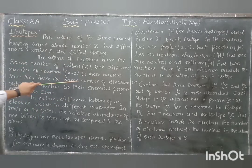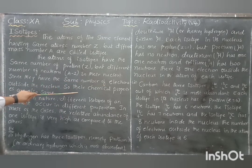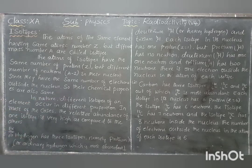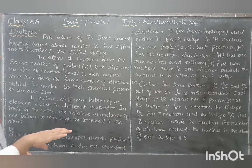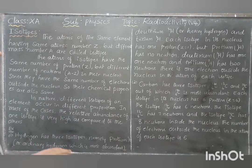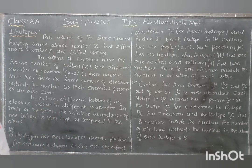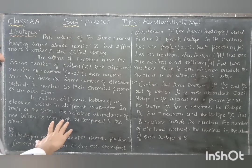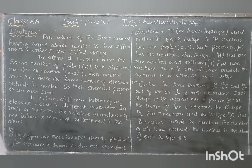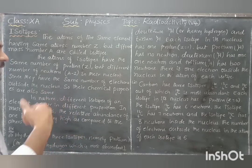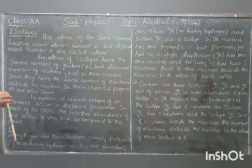Since they have the same number of electrons outside the nucleus, their chemical properties are also the same, because chemical properties depend on electrons. So there is no change in the chemical properties. The proton number is same, but change in the neutron number — that is the same element, we call it as isotopes.